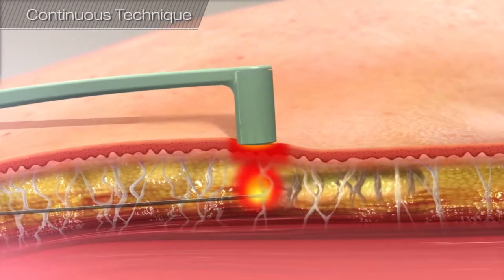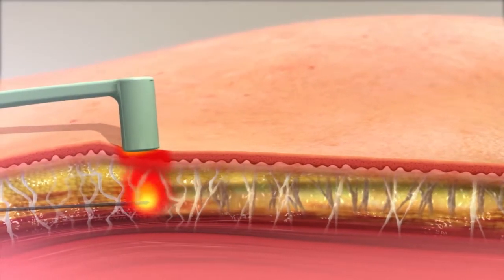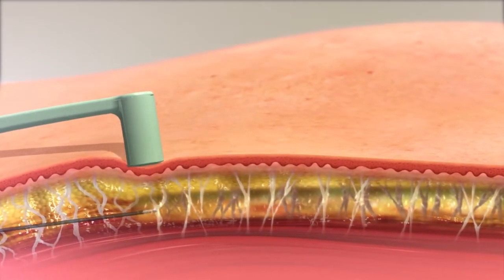The FaceTight procedure uses radiofrequency energy for internal fat lipolysis and external collagen contraction for small body areas or the lower face, neck, and jowl.